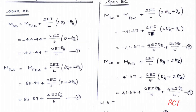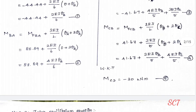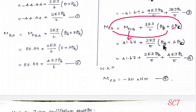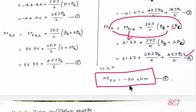Next, M_CB = M_F_CB + (2EI/L)(2θ_C + θ_B). Substituting the values, this gives M_CB = 41.67 + (2EI·θ_C)/5 + (2EI·θ_B)/5, which is equation number 4.